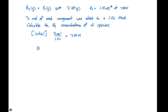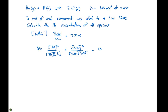If we set up our Q expression, it's going to be products over reactants: the concentration of HF squared divided by the concentration of H₂ times F₂. This gives us 2.00 squared divided by 2.00 times 2.00, so Q equals 1.00. Since Q is less than Kc, the equilibrium needs to shift to the right to reach equilibrium.